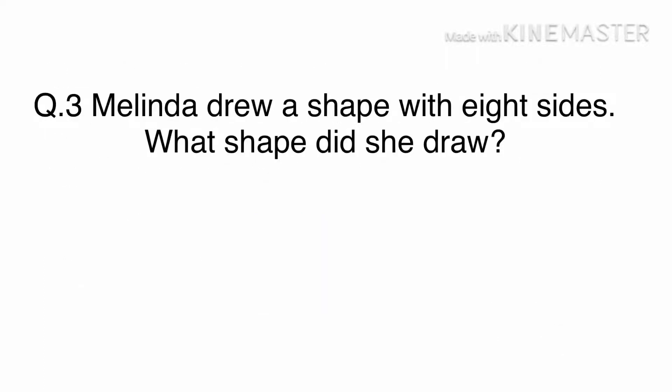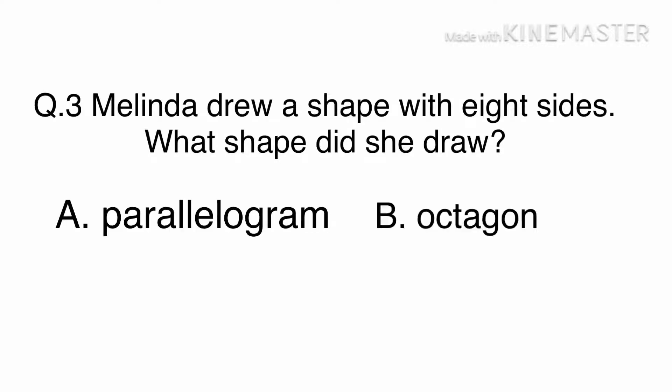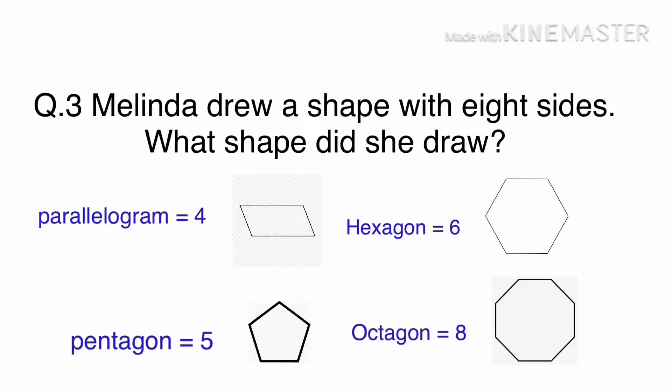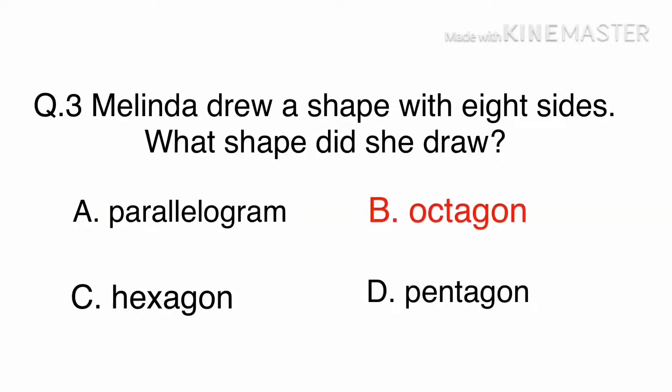Question 3: Melinda drew a shape with 8 sides. What shape did she draw? A. Parallelogram, B. Octagon, C. Hexagon, or D. Pentagon. Let's look at the number of sides each option has. The octagon is the only one with 8 sides. The answer is B, octagon.